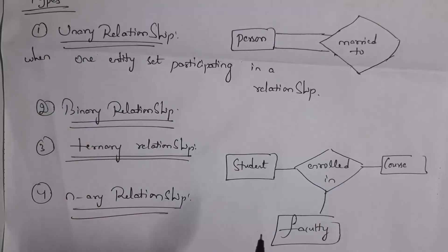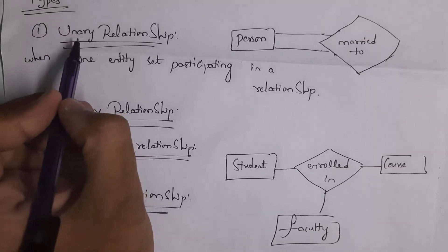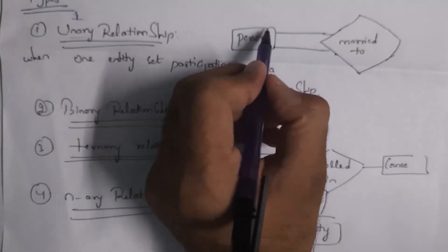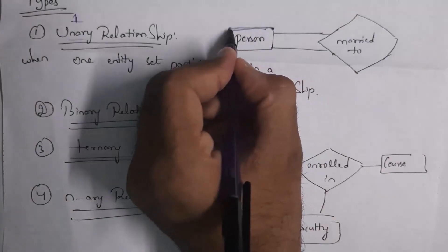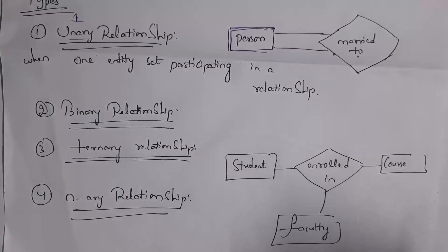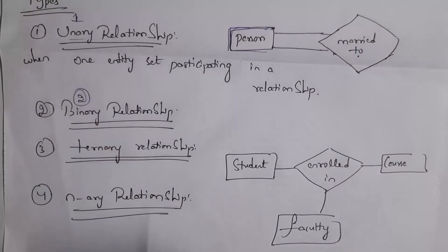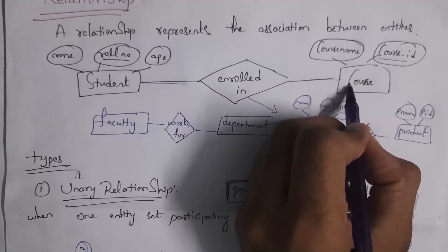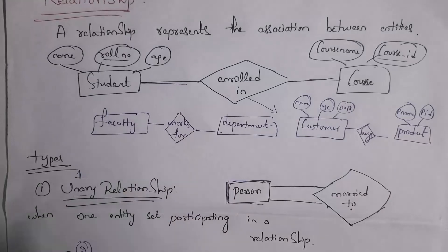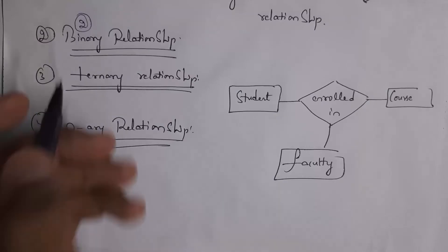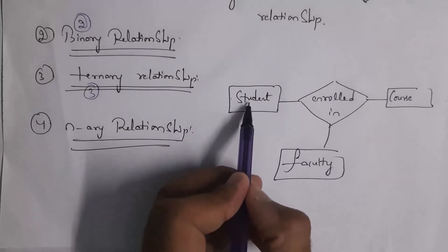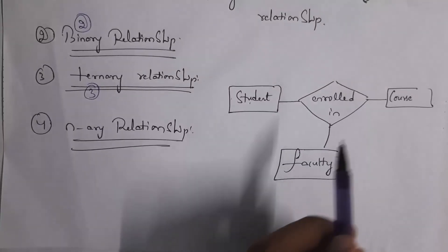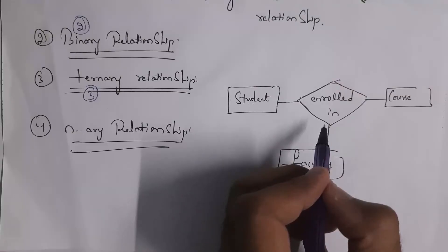These are various types of relationships. The first one is unary relationship — the name itself says 'unary' means one. If only a single entity is participating in a relationship, then we call it a unary relationship. For example, there is a person entity — a person will marry to a person, so this is a unary relationship. For example, student enrolled in course and faculty enrolled in course — so this enrolled in relationship is a ternary relationship.